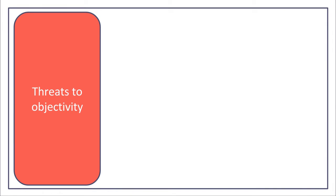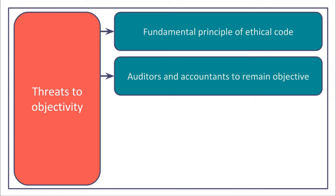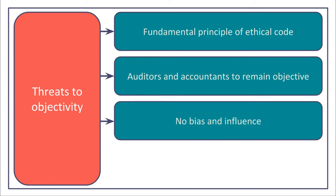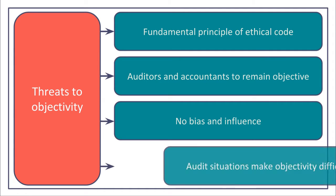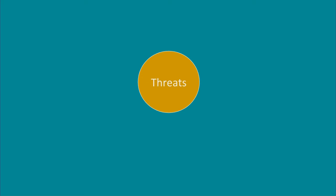Firstly, let's look at threats to objectivity. Objectivity is one of the fundamental principles given in the ethical code. We are told that auditors and accountants as a whole should remain objective when making decisions. They should not allow bias and not be influenced by others. However, during an audit there are many situations where influences could be present, making it difficult to maintain objectivity. These are known as threats to objectivity. We can categorise them into five types of threat.